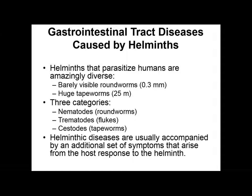Let's continue our discussion of digestive system diseases as we shift gear from viruses and bacteria to the helminths. Our helminths, or parasitic worms, can cause a wide variety of infections within human beings. There's a lot of variety within the parasitic worm category. These can be very small roundworms approximately 0.3 millimeters long, or enormously long tapeworms that could be 25 meters in length.